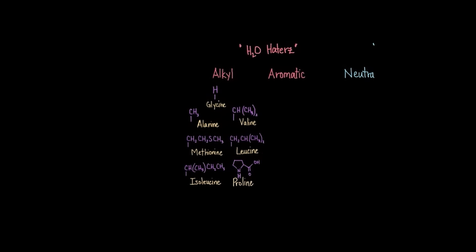As you can see here, we have seven different amino acids, and I've just drawn out the side chain for you. I've left the rest of the molecule out just to fit everything in here. And we have glycine, alanine, valine, methionine, leucine, isoleucine, and proline.